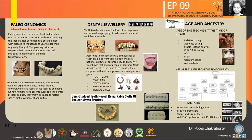Paleogenomics is a nascent field that studies DNA in remnants of ancient teeth. DNA in teeth is well protected from most taphonomic and microbial changes. Dental calculus is of great help to explore broad aspects. High-throughput DNA sequencing of calculus has provided valuable insights into the evolution of the oral microbiome and the history of epidemics. Dental modification is performed for different cultural purposes. In modern days we have orthodontics; in the past, it was filing down of teeth to points, drills, etc.